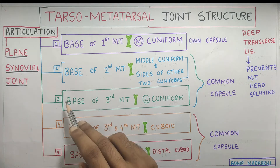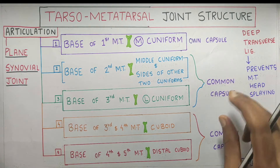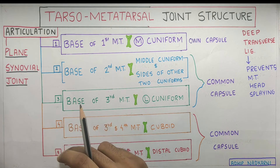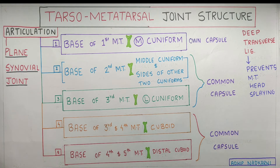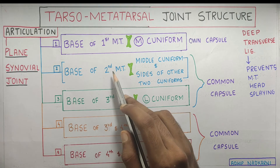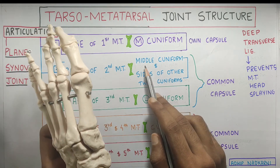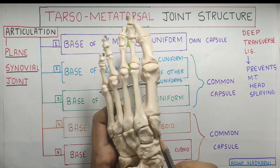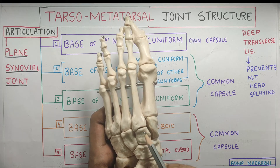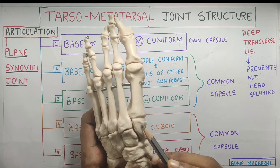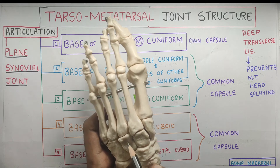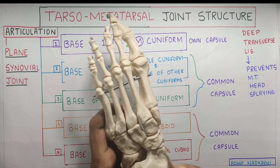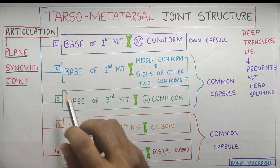The other two articulations — the second and third — will have a common capsule, and the fourth and fifth will have their own capsule. The second metatarsal base articulates with the middle cuneiform. There are three cuneiforms, and the second metatarsal also articulates at its sides with the medial and lateral cuneiforms.